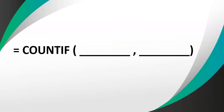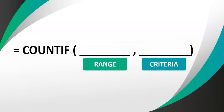Let's remember what a COUNTIF is about. With a COUNTIF, there's a range and a criteria. The range would be, for example, cells B5 to B12. We look in that range and then look for a criteria — such as greater than or equal to 50. So we're counting how many values in the range meet the criteria. That's a recap of a COUNTIF.